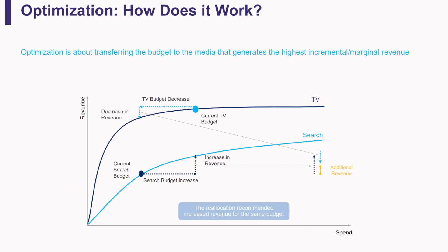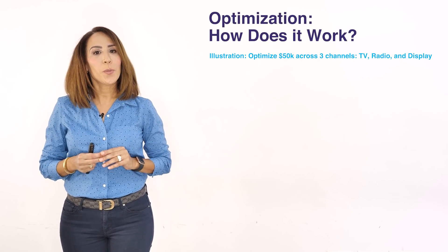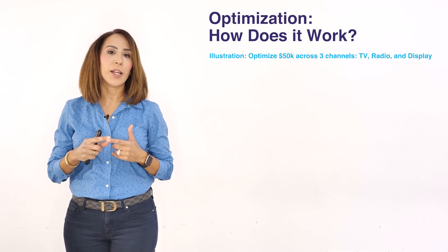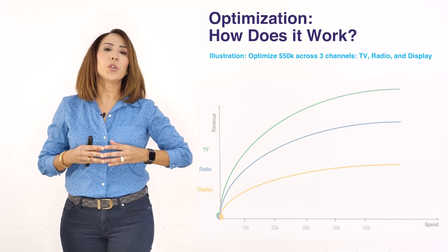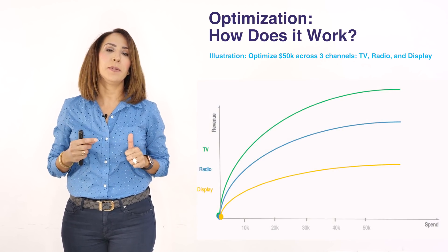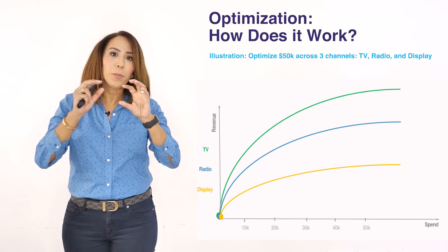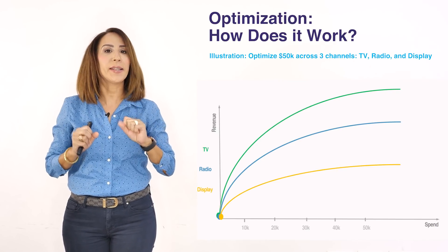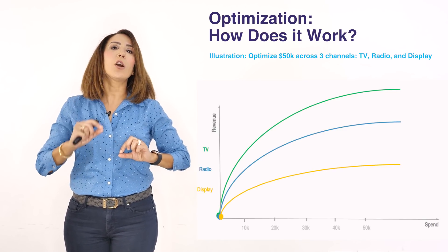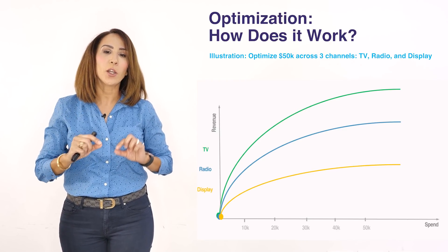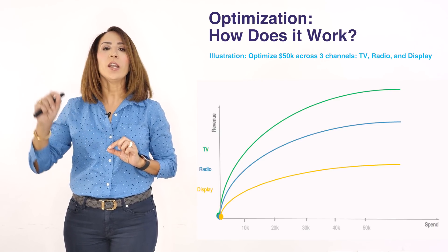Let me take you through a detailed example. Assume I have 50k dollars to invest in three channels: TV, radio, and display. The first step in any optimization algorithm is to derive the diminishing return curves for the three channels. Then we split that 50k budget into increments — let's say 10k, then 20k, then 20k — and use the comparison of the slopes of the three diminishing return curves to decide where to put each increment.